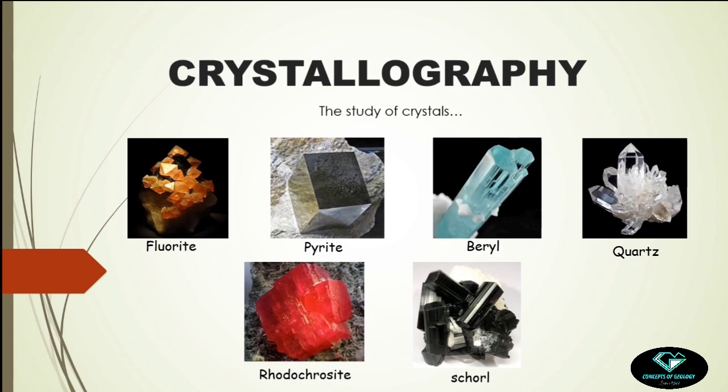Indeed, most minerals grow in some particular crystal shapes. Please concentrate on the picture here — fluorite has a definite shape, pyrite has a definite shape, beryl, quartz, rhodochrosite — all minerals have definite external appearances. That's why geologists have borrowed the study of basic crystallography from solid state physics or material science, as it can be used to identify crystalline minerals.